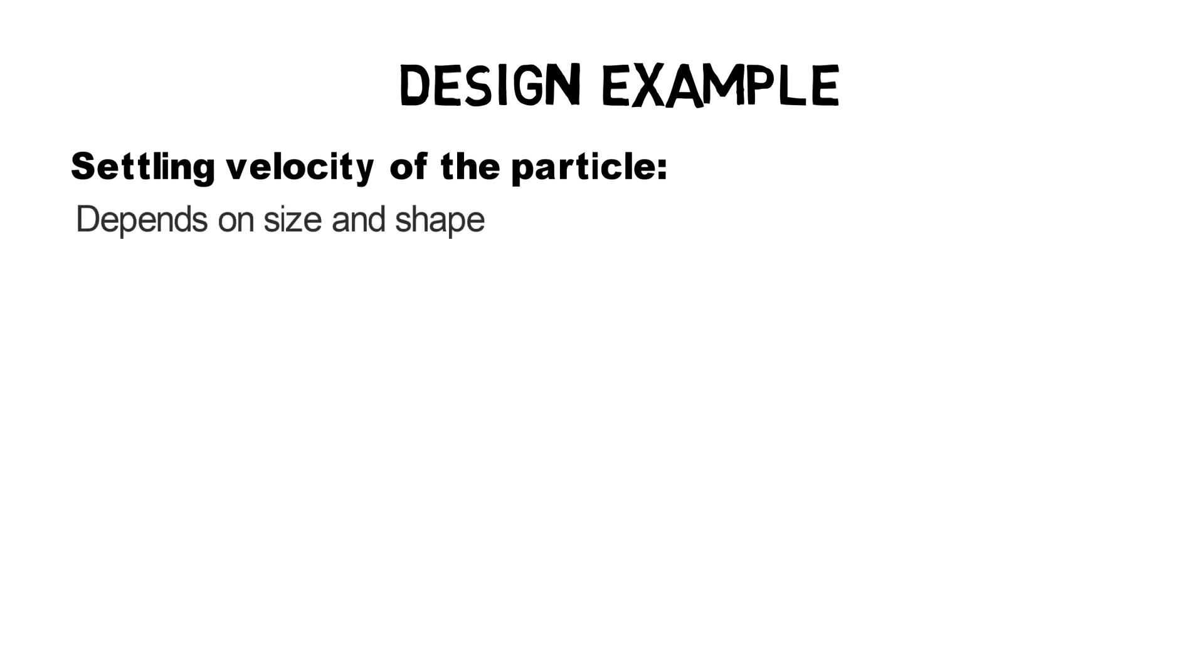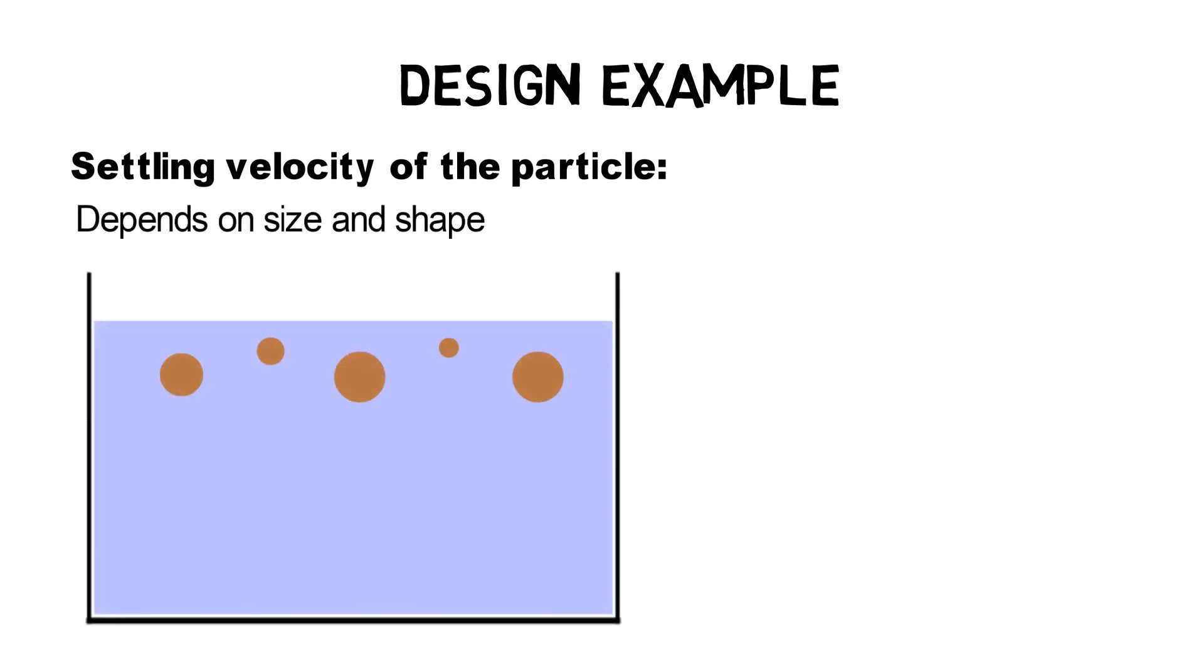First, we have to determine the settling velocity of the particles. The settling velocity depends on their size and shape. In general, smaller particles settle slower, hence they have a lower settling velocity.